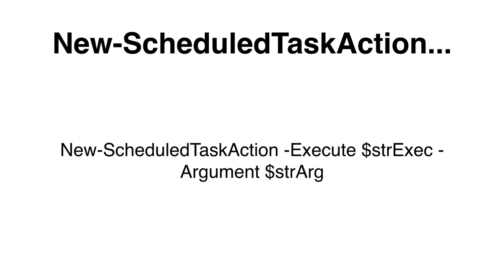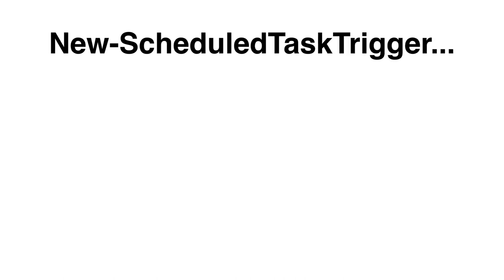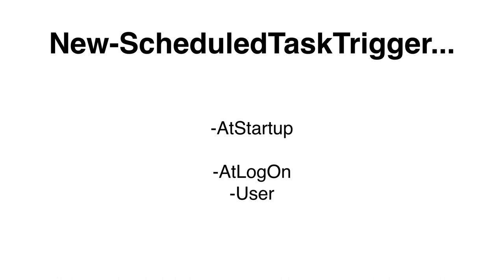This is an example of how to execute the New-ScheduledTaskAction cmdlet. Next up, we need to specify a trigger for our task using the New-ScheduledTaskTrigger cmdlet. The parameters that can be set include AtStartup, which will execute our action whenever the computer starts up, and AtLogon, which will execute the action at logon. If we use the AtLogon option, we can also limit the action to only execute for a specific user.